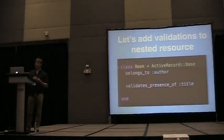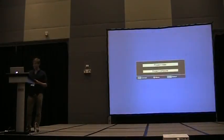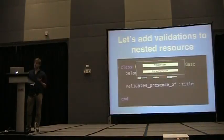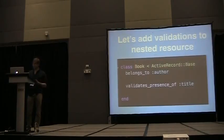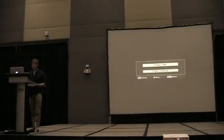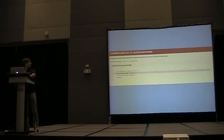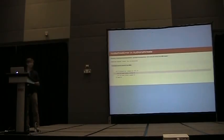Now let's go ahead and add validations to the nested resource, and this is kind of where everything starts falling apart. I'm going to add validations to the title for a book. I'll resubmit the form and leave the title blank. And this is what happens — it creates an invalid book model object, and you get this error. It's trying to render the attributes for an invalid book model.